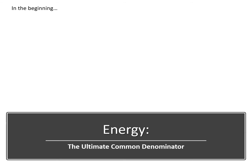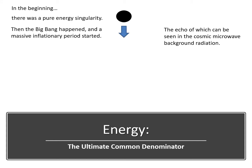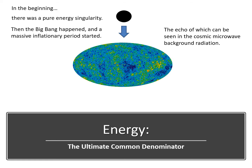The Tree of Knowledge System starts with our best insights from modern cosmology and the idea that the universe began as a pure energy singularity. The Big Bang can be thought of as the beginning of our universe, and the echo of the Big Bang is seen in the cosmic microwave background radiation. According to the TOK, the Big Bang gives rise to the first dimension of complexity, which is called matter.